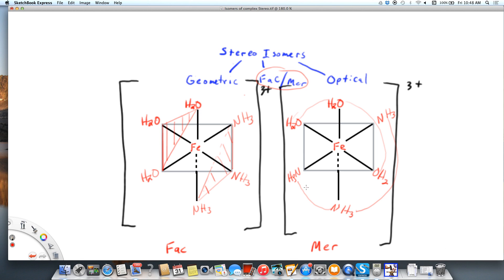In order to have the FAC, they all need to be, none of them are across from each other. They're all in the cis position to each other. So these are stereoisomers, and those are the FAC-mer examples.